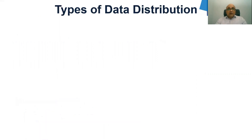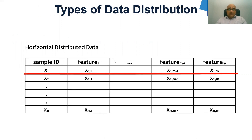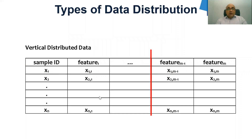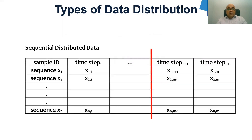There are different types of data available. First is horizontal data. In horizontal data distribution, different clients contain unique training samples with unique sample IDs — there are not different versions of one sample ID in different clients. Different training samples on different clients are represented by the same features. Then we have vertical distributed data, in which different clients contain different versions of the same training samples with the same sample IDs but represented by different features. And then we have sequential distributed data, in which the training samples are sequences — from time stamp one to time stamp N with multiple segments — and these multiple segment sequential data are distributed across clients.